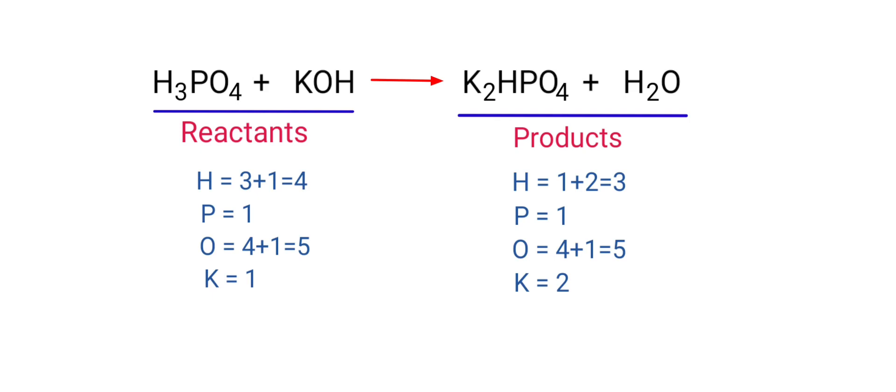In this equation, we need to balance the potassium atoms first. To do this, we need to put a coefficient of 2 in front of KOH.